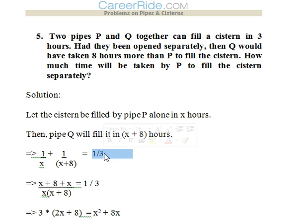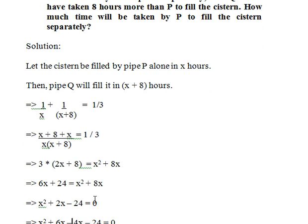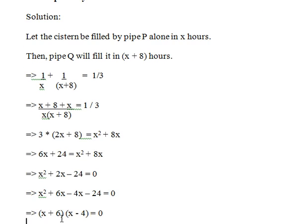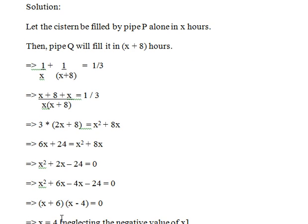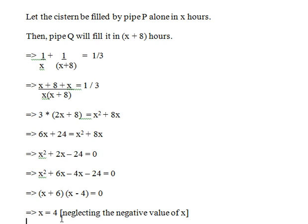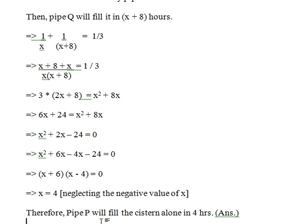We get the quadratic equation x squared plus 2x minus 24. Factorizing, we get (x + 6)(x − 4) equals 0. We get x equals 4, rejecting the negative value x equals minus 6. So pipe P will fill the system alone in 4 hours. I hope the problems solved in this video will help you gain some confidence while dealing with problems from this chapter. Thank you.